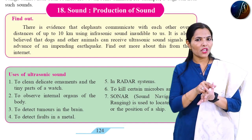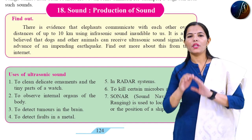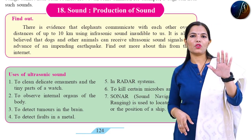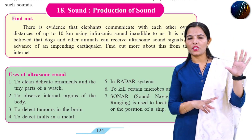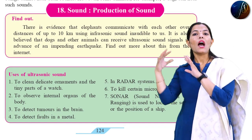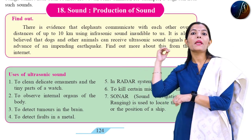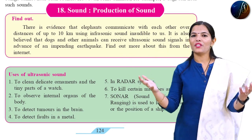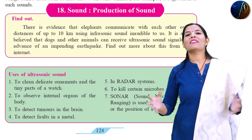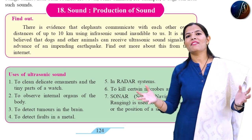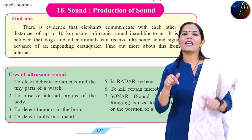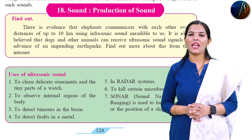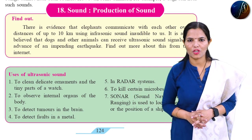So, we have covered the concepts of infrasonic sound, audible sound, and ultrasonic sound. Infrasonic sound is below 20 Hz, audible sound can be heard by humans, and ultrasonic sound is produced by bats, dogs, and other animals, and is very useful. We have completed lesson number 18 on Sound and Production of Sound.